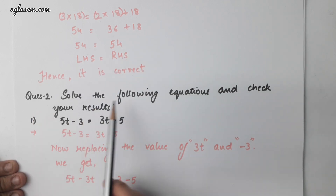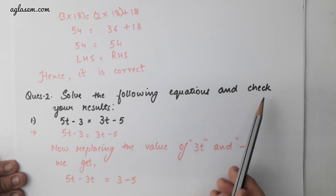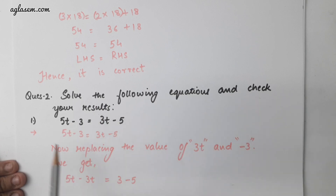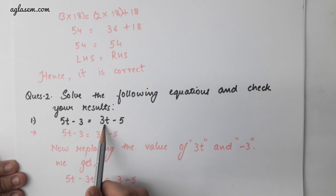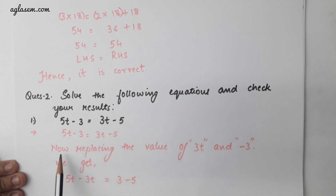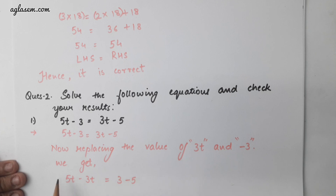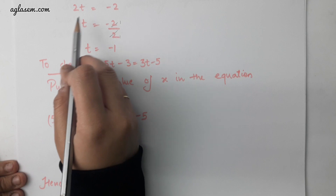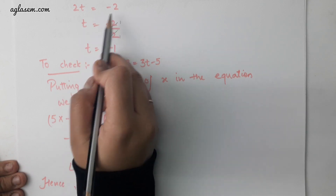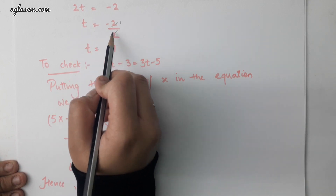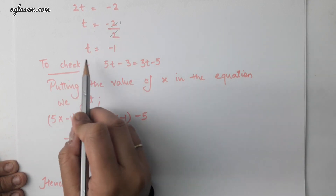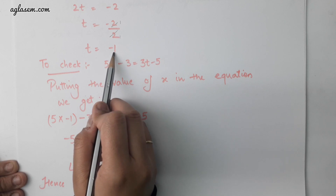Question number 2: solve the following equation and check your result. Part 1 is 5t minus 3 equals to 3t minus 5. Replacing the values, we get 5t minus 3t equals to 3 minus 5, giving 2t equals to minus 2. Therefore, t is equal to minus 1.